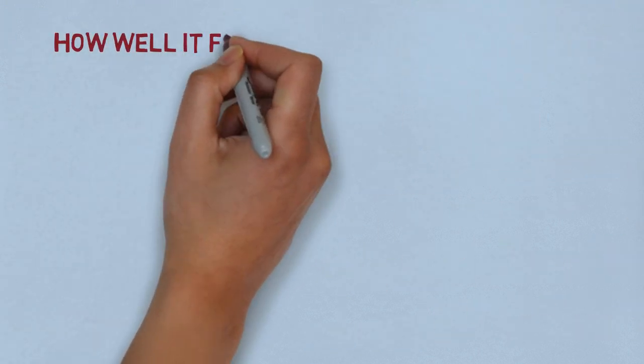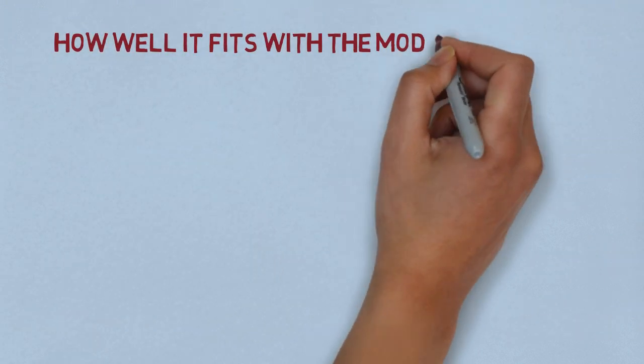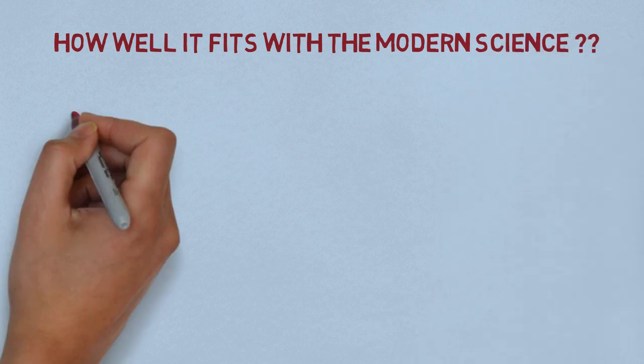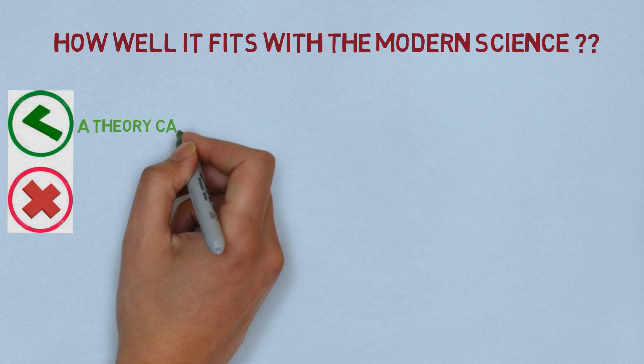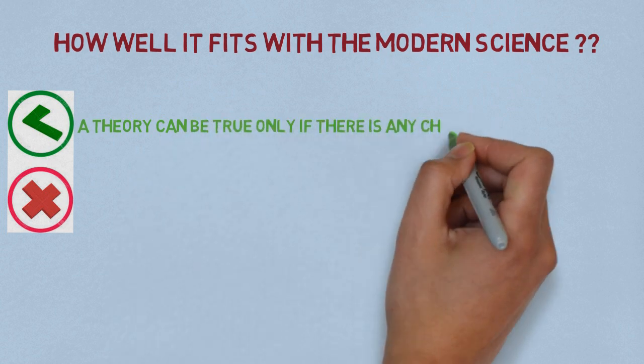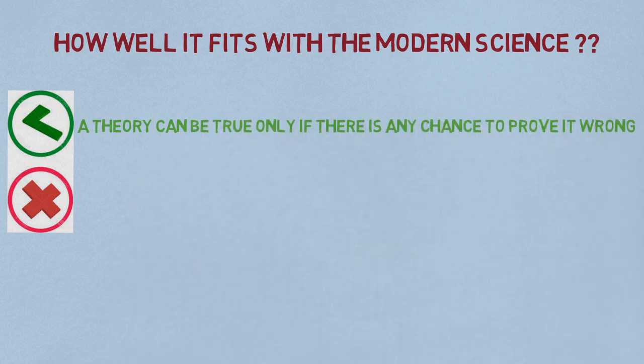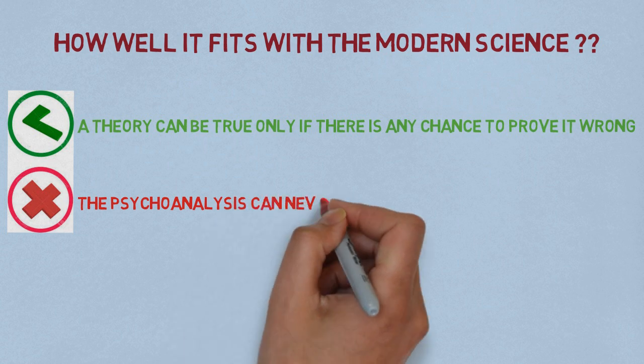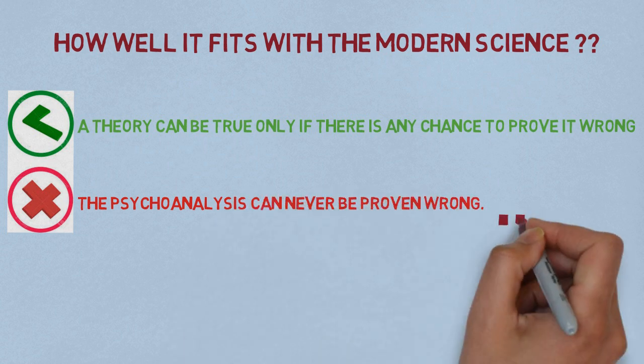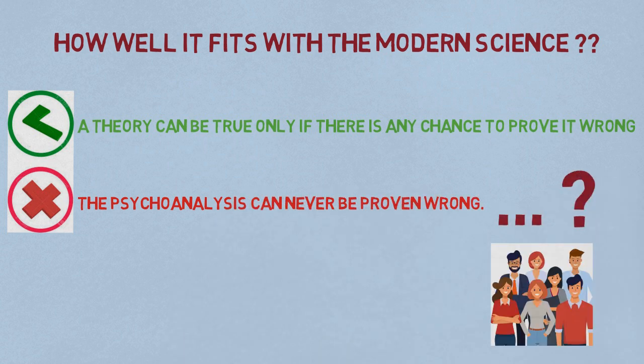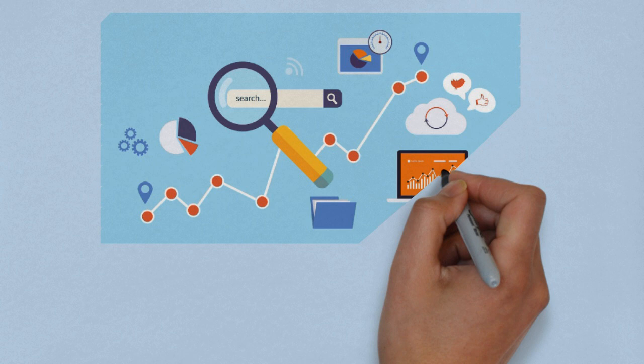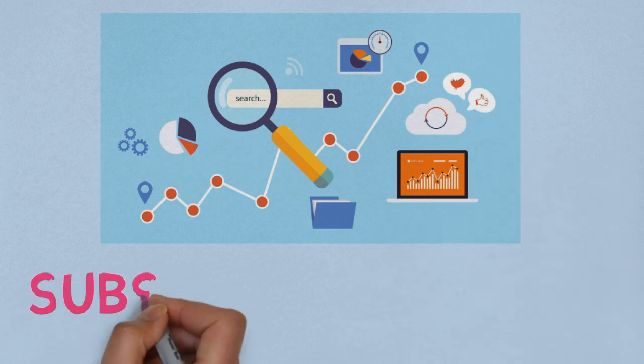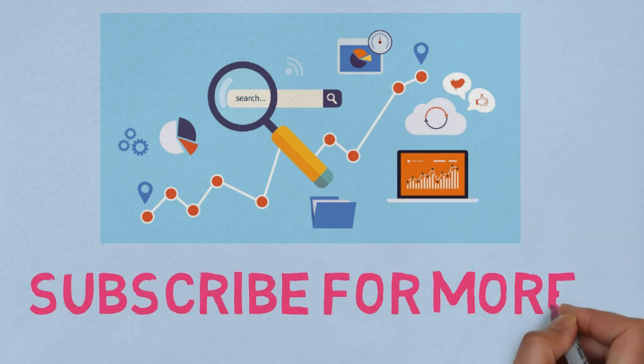Of course, many critics believe that is not the slightest bit true. That is, because they believe a theory can be true only if there is any chance to prove it wrong. And this is the problem with psychoanalysis. It can never be proven wrong. With this aroused many other questions, but the answer differs from person to person. With that being said, I encourage you to look more into it and find an answer for yourself. This is the end of today's episode. Subscribe for more. Bye.